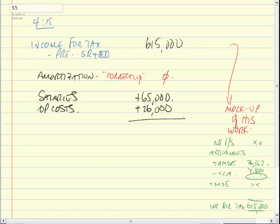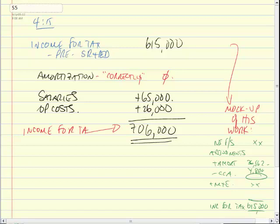We found everything he's done that messed things up. We add up this interim number — it is $706,000. Caption that: it's income for tax pre-SR&ED. We've undone the damage from his handling of SR&ED. So if we do nothing for SR&ED, we'll pay tax on $706,000. Now let's talk about SR&ED — how does it work? They paid how much that should go into the pool? Let me get my artwork going — I will make it look like a pool. This is the pool.